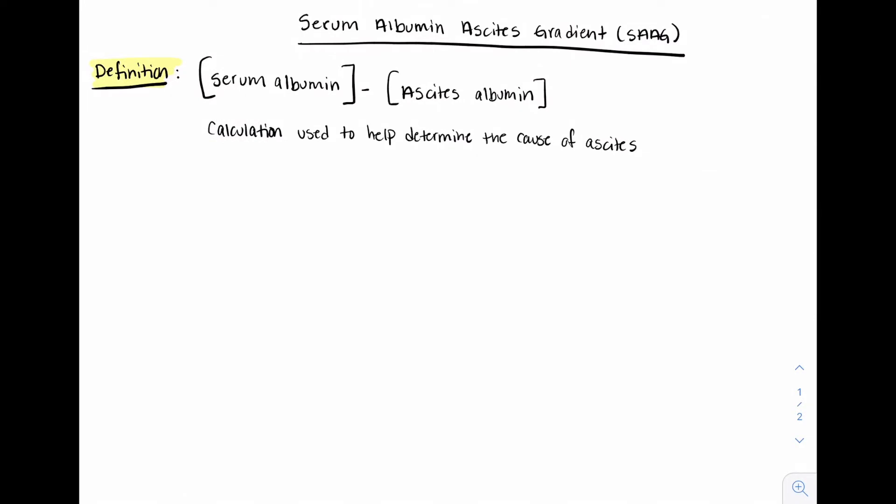But before we talk more about the use of SAAG, let's go back and do some review, starting with ascites, which is the abnormal accumulation of fluid in the peritoneal cavity.